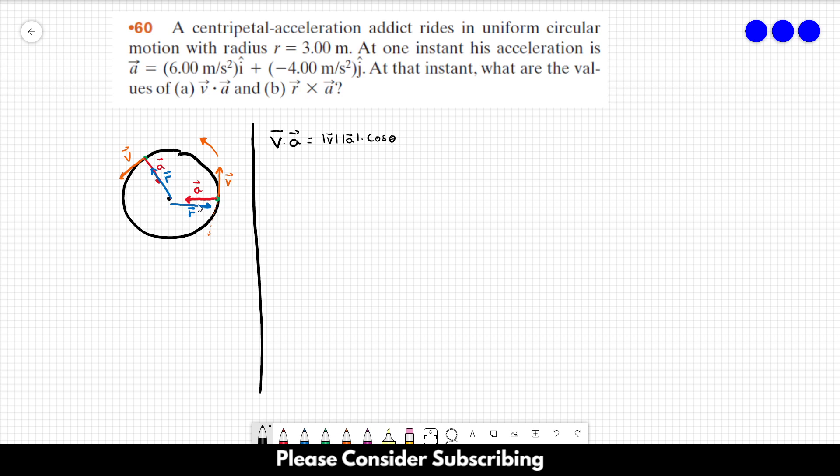And as you can see here, this angle is always 90 degrees, and the cosine of 90 degrees is 0. So this dot product is 0. So the answer of letter A is 0.